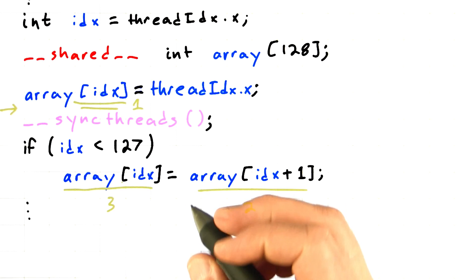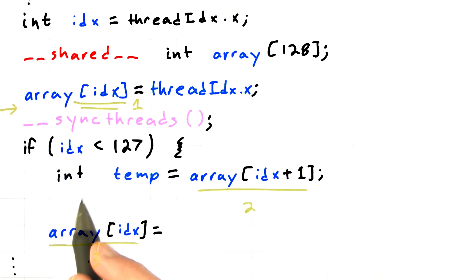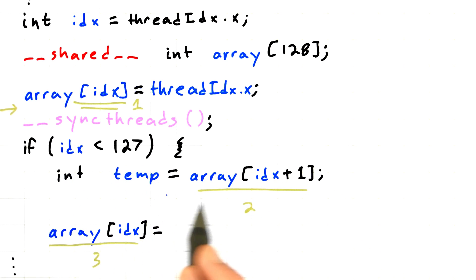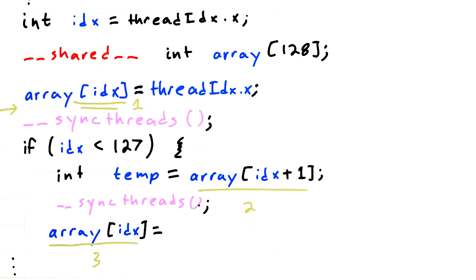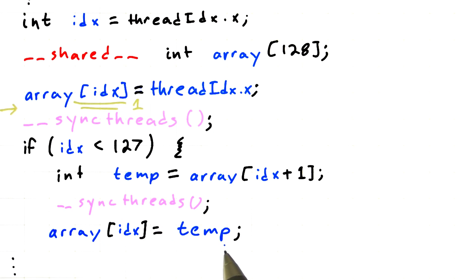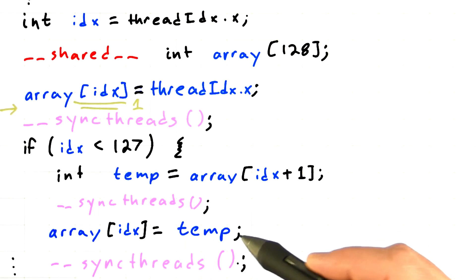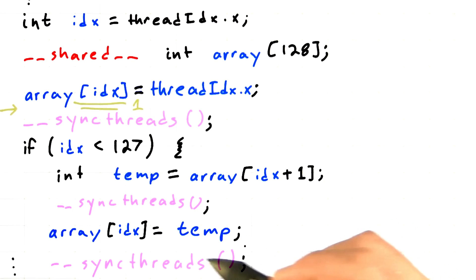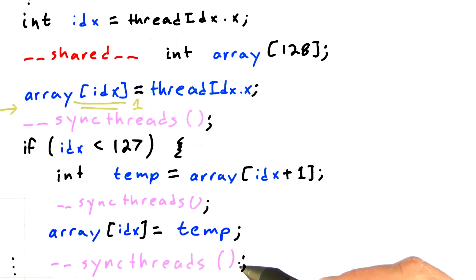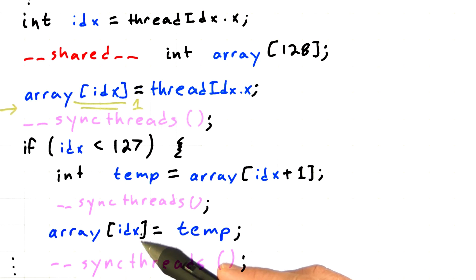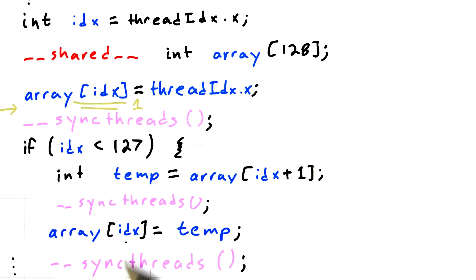So really we need to restructure this code. We'll make this read operation explicit, put it in a local temporary variable. We'll call sync threads. We'll perform the write operation explicitly. And then just to be absolutely safe, before anybody can use these written values, we need another sync threads to ensure that all of these write operations have completed before anybody attempts to do anything with this array value afterwards.